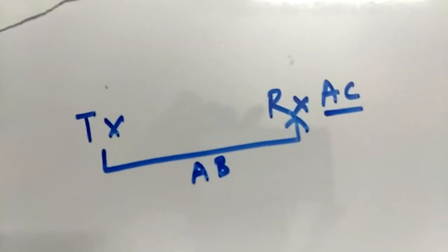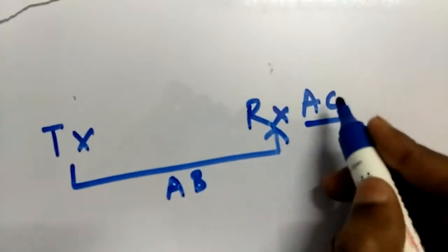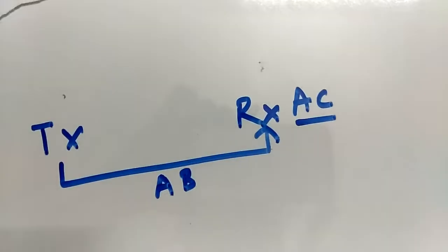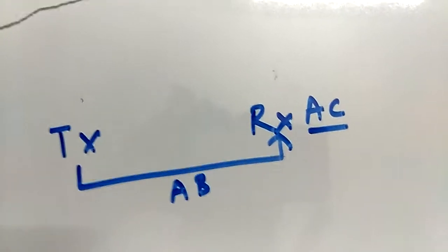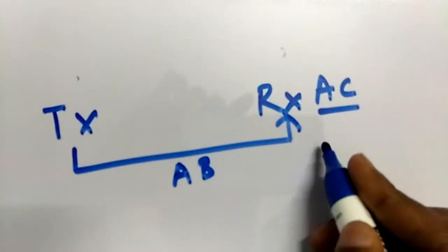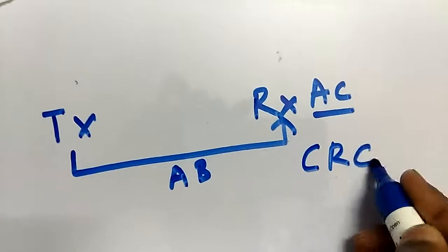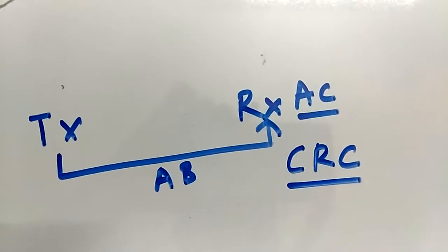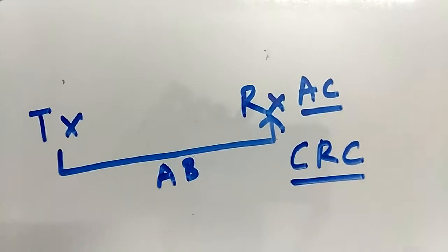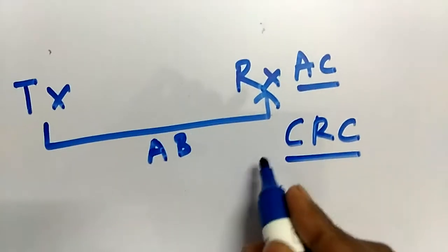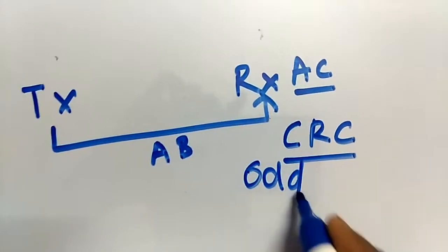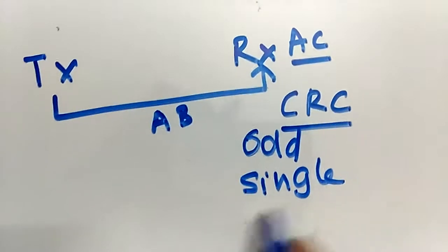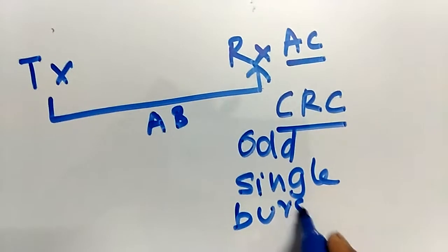The receiver doesn't know whether the data it received is correct or not. So we introduce this error detection method — CRC. It's very fast and good for error detection. CRC can detect odd errors, single bit errors, and burst errors — these three types of errors.